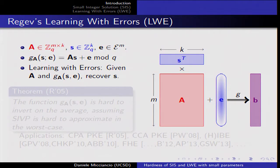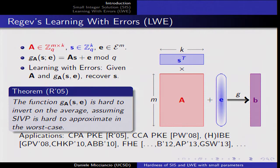In order to make it harder to invert, you add an error to its output. The function G takes as input two vectors — a secret S and an error E — and outputs AS plus E modulo q. This function was proved hard to invert based on the worst-case hardness of lattice problems, and it has been the basis for even more applications, including fully homomorphic encryption.